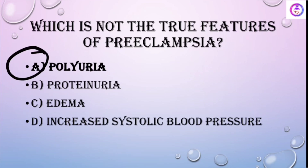The features of preeclampsia are proteinuria, edema, and increased systolic blood pressure.